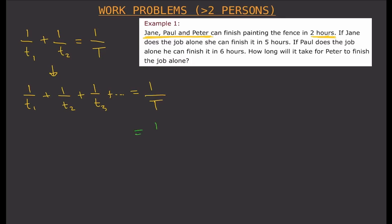Since all three work together and finish in two hours, we have one over two on the right side. Jane's individual time is five hours, so t-sub-one gives us one over five. Paul's individual time is six hours, so t-sub-two gives us one over six. For Peter's unknown time, t-sub-three, we write one over p, where p stands for Peter. So our equation is: one over five plus one over six plus one over p equals one over two.